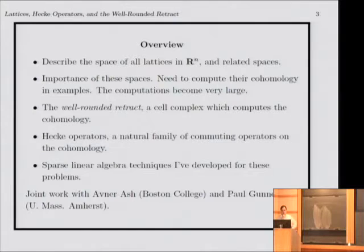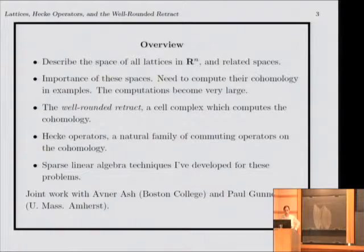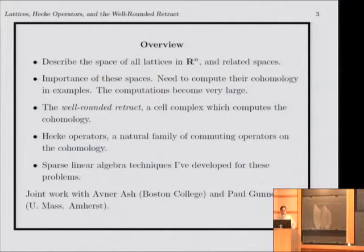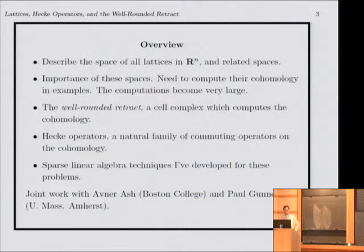To do the computations, we introduce the well-rounded retract, which is a cell complex with which we can compute the cohomology. I'll talk a bit about Hecke operators, which are a natural family of commuting operators defined in terms of things you do with the lattices. They're commuting operators on the cohomology, and whenever you have commuting operators, you have a simultaneous diagonalization and the eigenvalues are very interesting. Finally, because these computations are large, I'll describe some new techniques I've developed. Everything here is joint work with Avner Ash, my friend at Boston College, and Paul Gunnels, who's now at UMass Amherst.